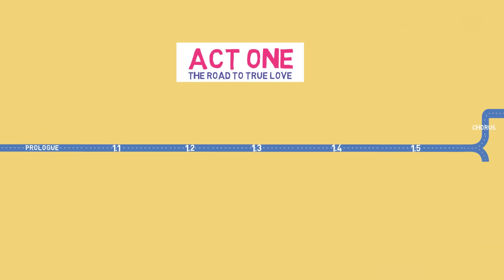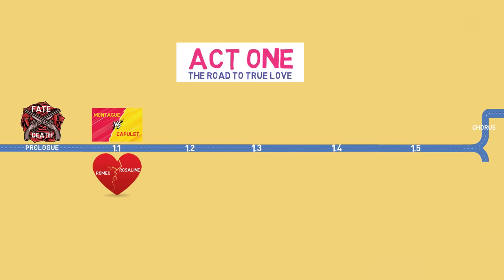Starting with the prologue, it simply tells us that Romeo and Juliet's fate is predetermined and only their deaths can reconcile their warring families. Scene 1 shows us how the two families hate each other. They only stop fighting when the prince intervenes and threatens them with death. In this scene, we also discover that Romeo thinks he's in love with a girl named Rosaline, but that she doesn't love him. The important thing to note here is that Romeo wants to fall in love.